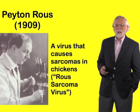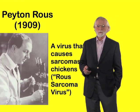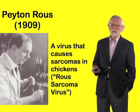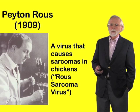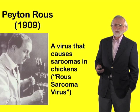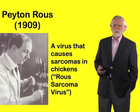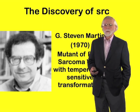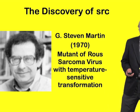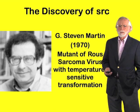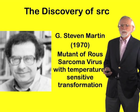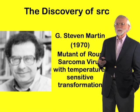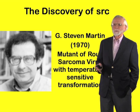This story began in 1909 when Peyton Rous at the Rockefeller Institute discovered a virus that causes sarcomas in chickens — Rous's sarcoma virus. It was a complete mystery as to how this virus caused cancer until 1970, when Stephen Martin at the University of California, Berkeley isolated a mutant of Rous's sarcoma virus that demonstrated temperature-sensitive transformation.